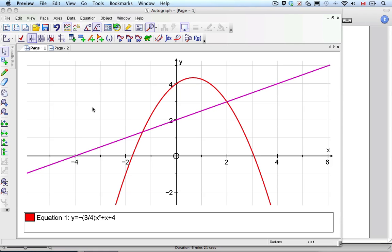Here we are, doing a 2011 calc test, question number 8. Number 8 says you have this function, negative 3 quarters x squared plus x plus 4, and you're supposed to first find the derivative.